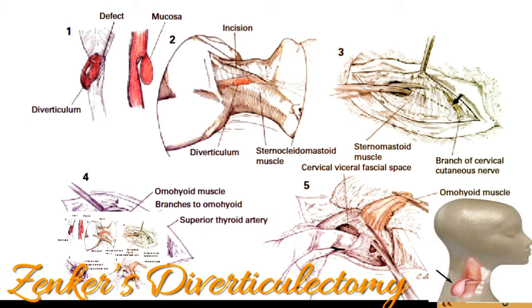Towels may be eliminated by using a sterile adherent transparent plastic drape. A large sterile sheet with an oval opening completes the draping. The surgeon stands on the patient's left side and should be thoroughly familiar with the anatomy of the neck, aware that a sensory branch of the cervical plexus — the cervical cutaneous nerve — crosses the incision 2 or 3 cm below the angle of the jaw.